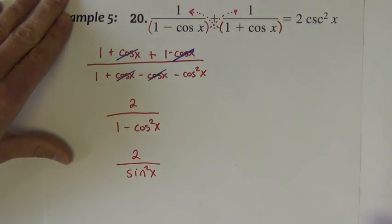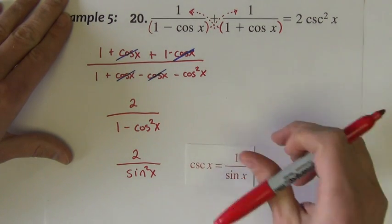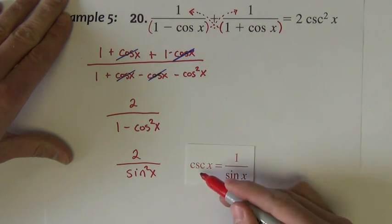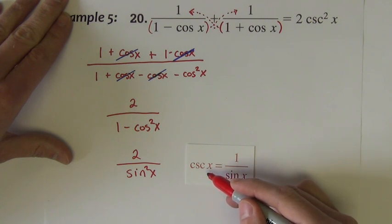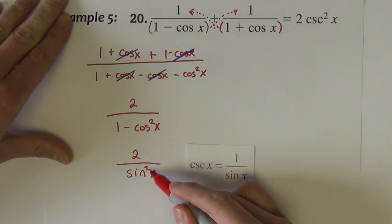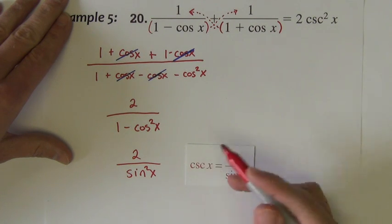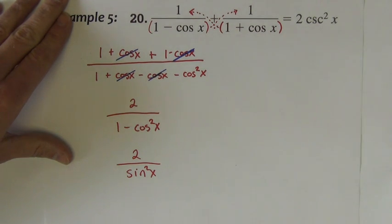So this is the same as 2 divided by sine squared x. Now, we know that sine has a reciprocal. The reciprocal of sine, 1 over sine is simply cosecant. If it was sine squared, it would simply be cosecant squared. So that's the last step, is to use a reciprocal identity.